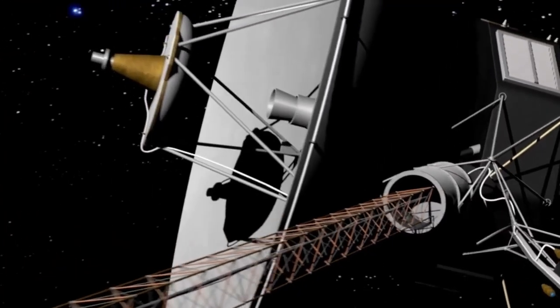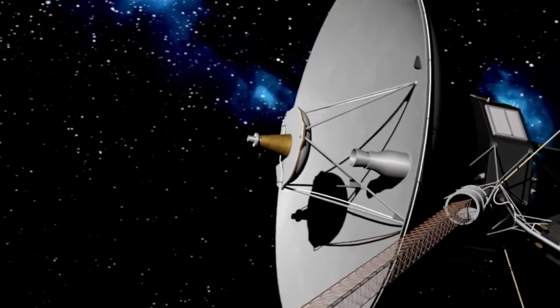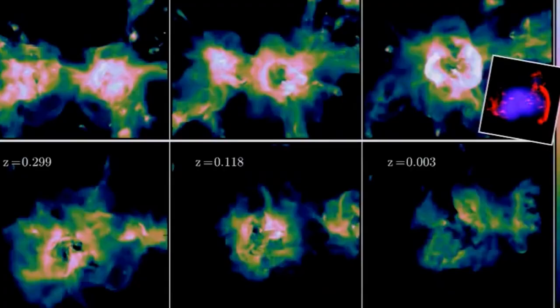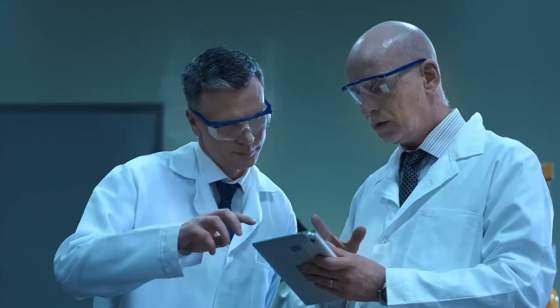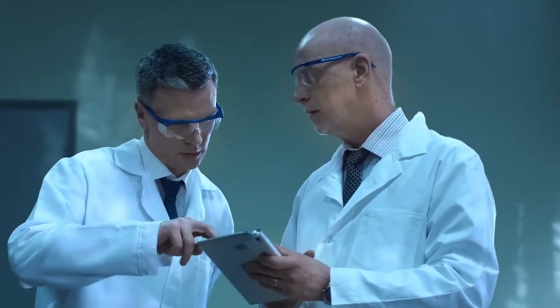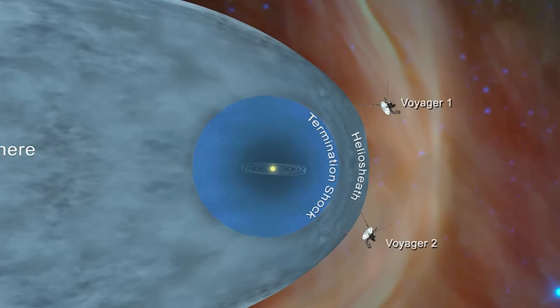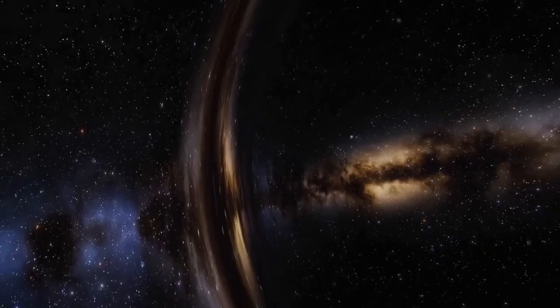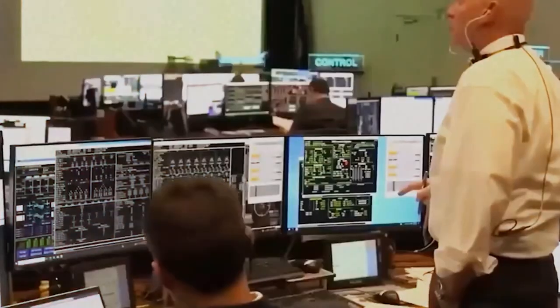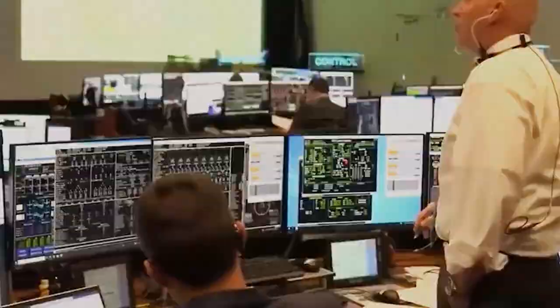Voyager's instruments measure fluctuations in cosmic ray intensity and variations in magnetic field strength, offering a rare view into this enigmatic region. What might we uncover about the nature of the interstellar medium as the Voyagers continue their journey? Could these measurements reveal new cosmic phenomena or challenge our current models of the universe?